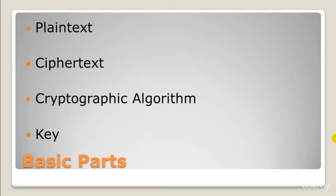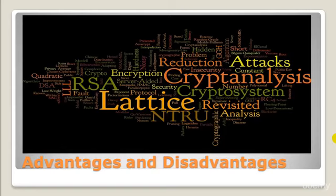The fourth and final part is the key — a mathematical value, formula, or process that determines how a plaintext message is encrypted or decrypted. The key is the only way to decipher the scrambled information, and these are the four parts of actual cryptography.